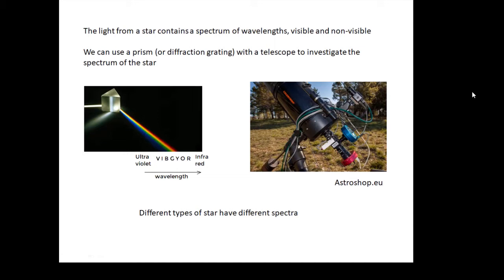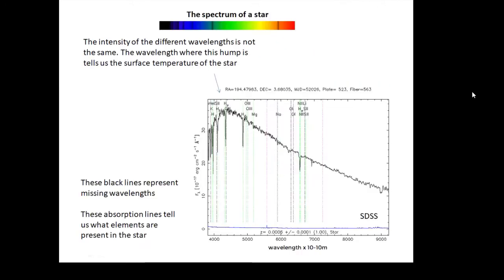This detector will look at the different wavelengths which are present in that light, and that is the spectrum of the star. What we see is that there are different types of star and they have different spectra. If you look at the spectrum of a star you get ROYGBIV but you get a hump.